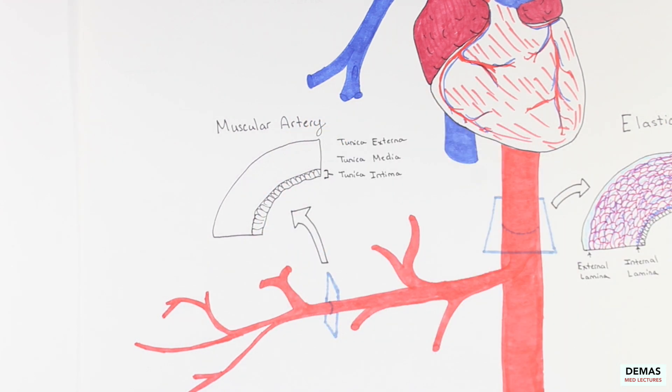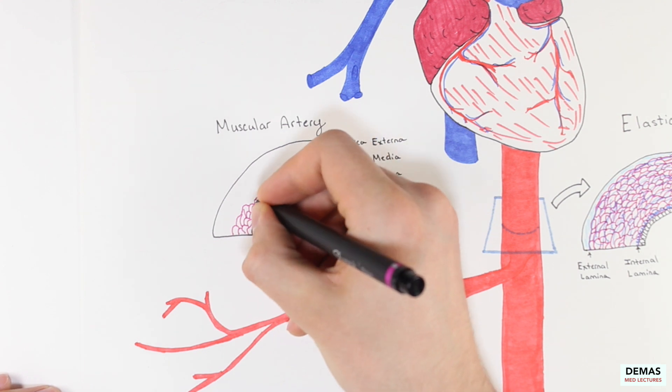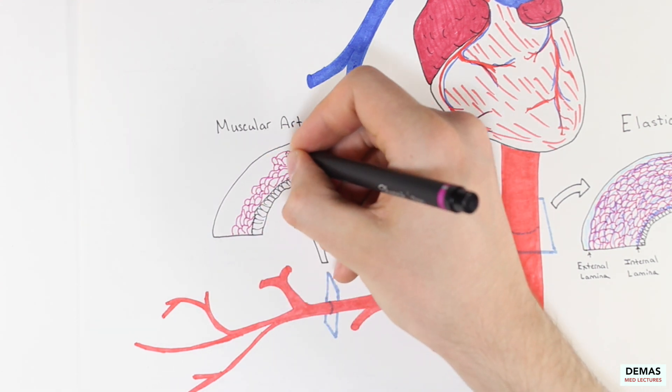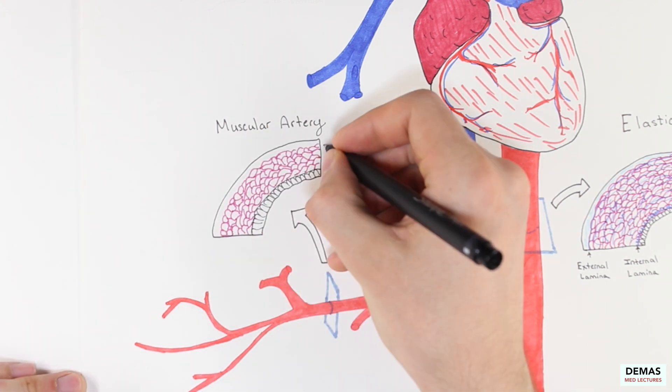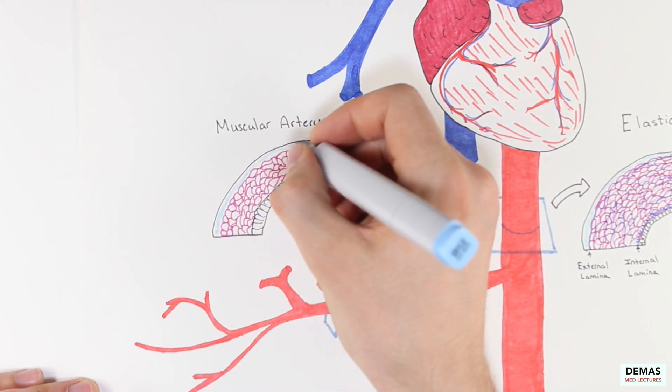The muscular arteries have a single layer of tunica intima, a medium thickness layer of tunica media, as shown here, and a variable thickness layer of tunica externa.